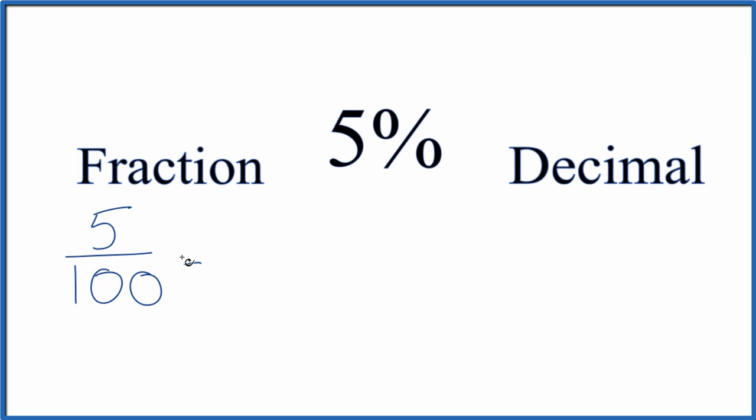We could even simplify this, though, to lowest terms. 5 divided by 5 is 1, and 100 divided by 5 is 20. So we could simplify this down to 1 twentieth, which is another fraction for 5%. These are equivalent. They're both equal to 5%.